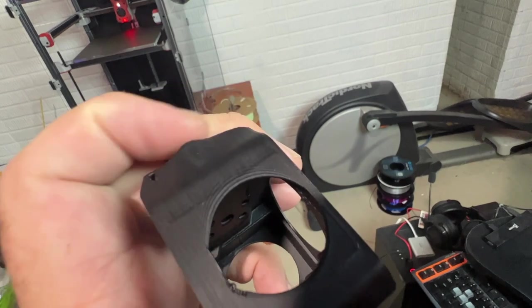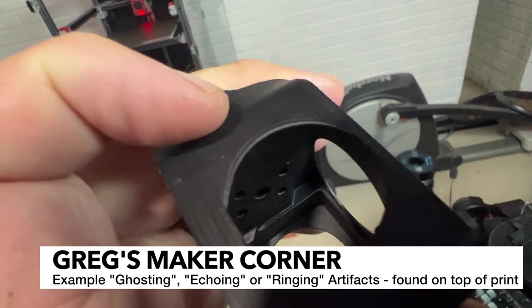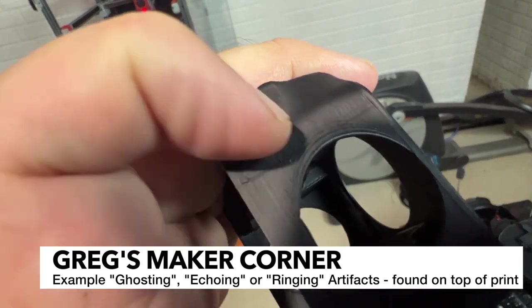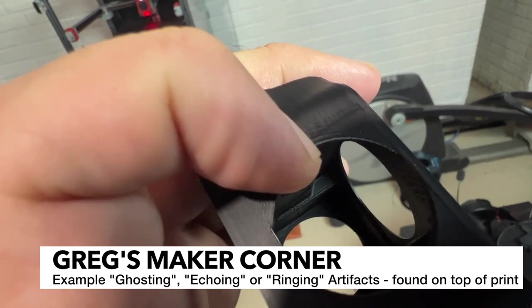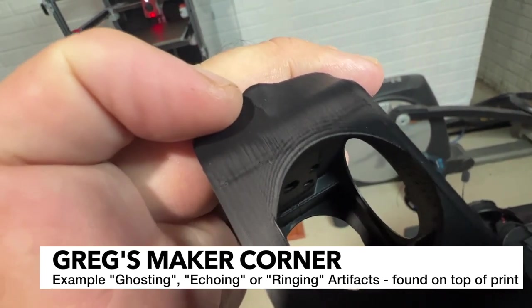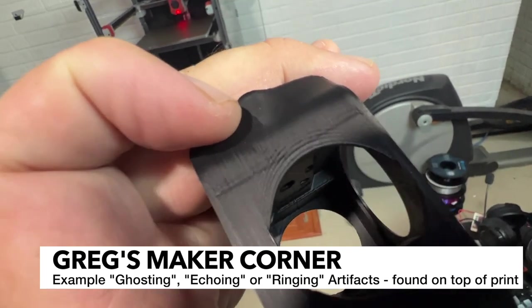I actually happened to print a cowling for my Voron Zero on the Trident just as a test print and you can see there's a tiny bit of ghosting here. See how that curve kind of echoes? Well that's what we mean by ghosting. That's not ideal, right?